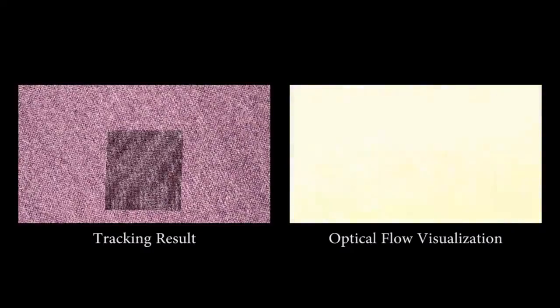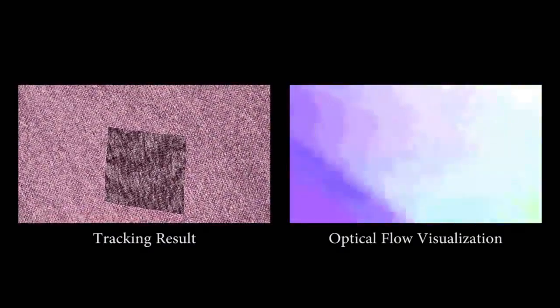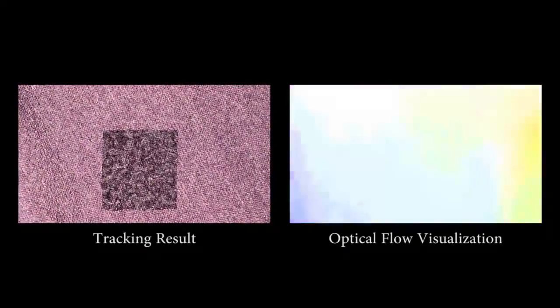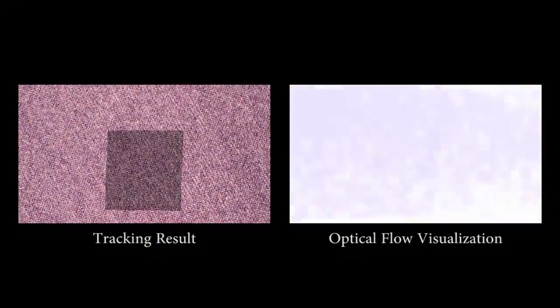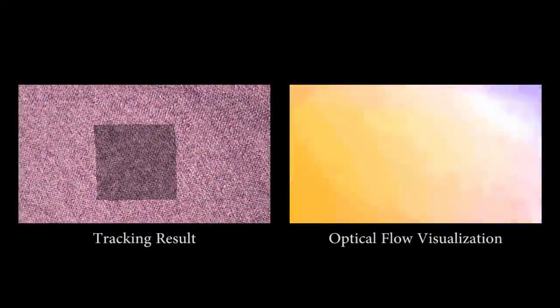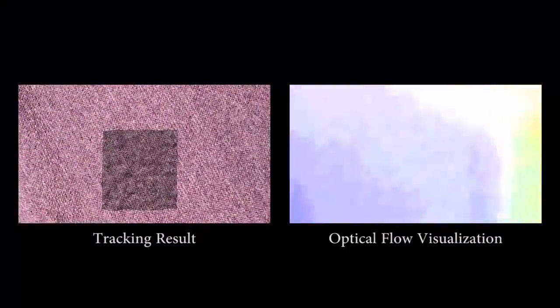The first example we show is texture mapping. This cloth example is a challenging case with non-rigid deformations and complex motions. We use several points; each point uses an average of the vectors around its neighborhood to compute its location on the next frame. Just using the motion vectors, we can see that the points move accordingly. Because of the dense optical flow vectors, the points move continuously and realistically.